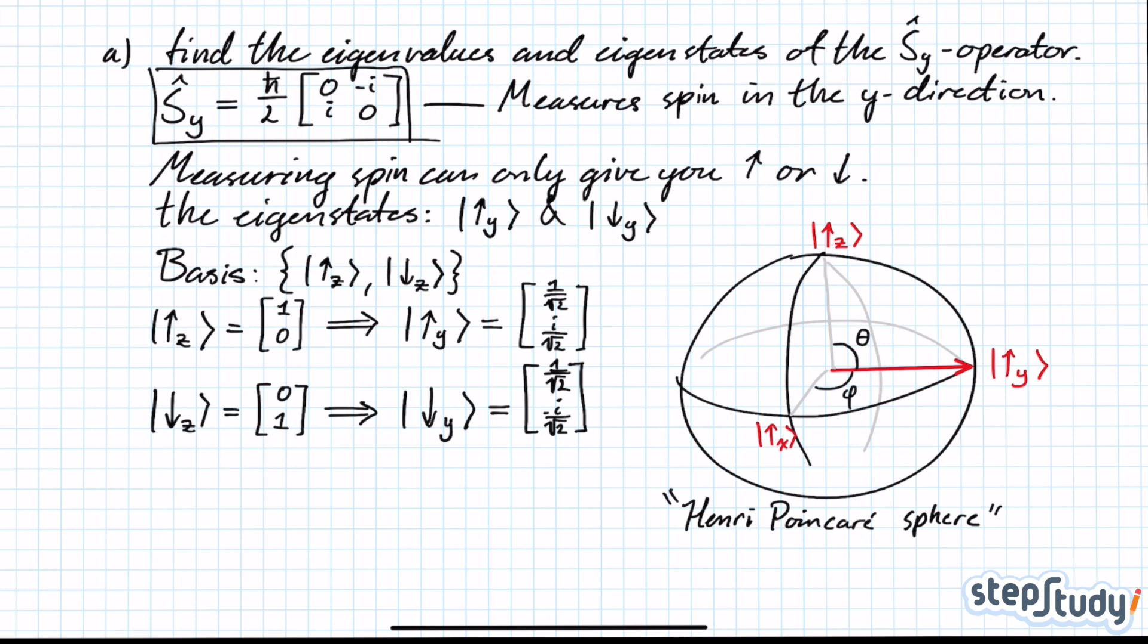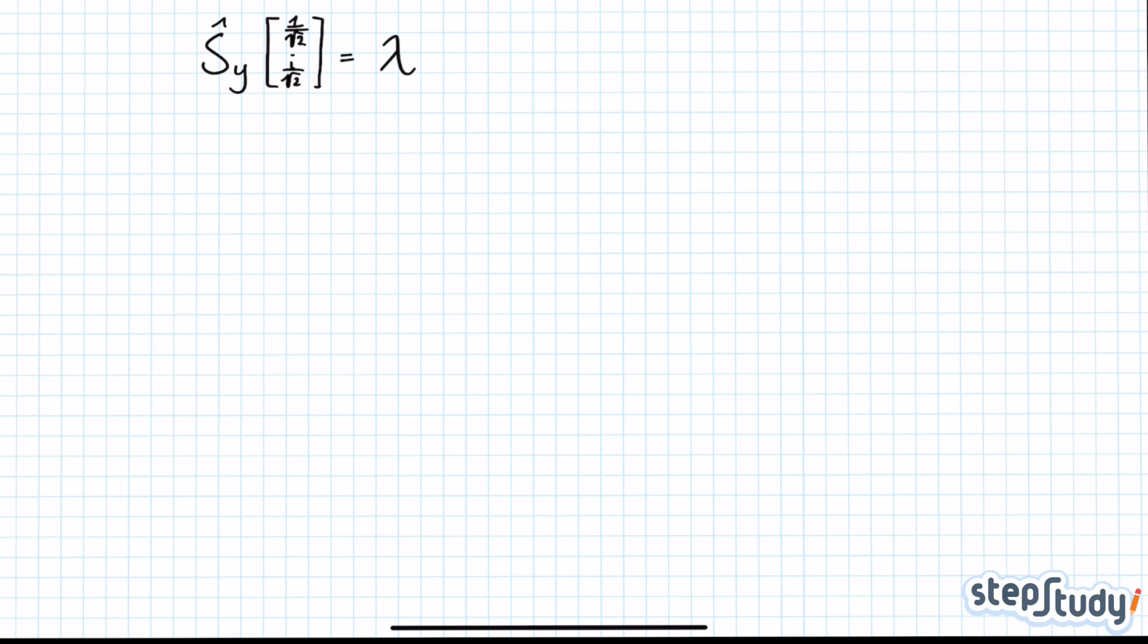So any given state of spin can be defined by the angles theta and phi in the Henri Poincaré sphere. To write out the vector for the spin-up state in the y-direction, you'll have to look at the Henri Poincaré sphere, see what the state looks like, plug in the angles theta and phi. If you do this for the spin-up and spin-down state in the y-direction, you'll get this vector with 1 over square root 2 and i over square root 2.